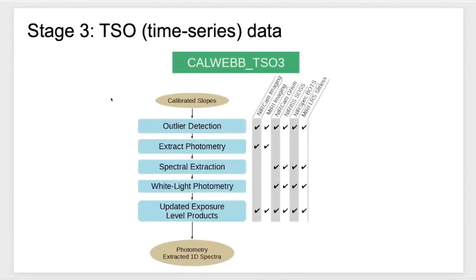Finally, TSO — time series observing data. There is an imaging mode for TSO, so NIRCAM imaging is captured here, but most time series observing modes are spectroscopic: either NIRCAM GRISM, NIRISS SOSS (Single Object Slitless Spectroscopy), NIRSPEC bright object time series, or MIRI LRS slitless. These modes involve very bright targets observed in time series. The stage three pipeline extracts either photometry (if imaging) or spectroscopy, and you end up with a series of products as a function of time.